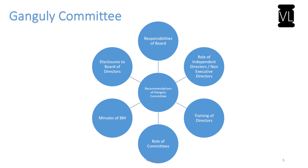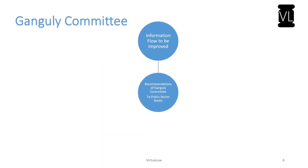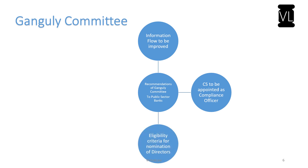The Ganguly Committee also has a separate set of recommendations exclusively for public sector banks. These include: improving information flow to the board of directors, appointing a compliance officer who is preferably a company secretary, having a policy and eligibility criteria for nominating directors onto the board, and ensuring the board composition reflects the requirements of the banking sector and the industry in which the bank operates.